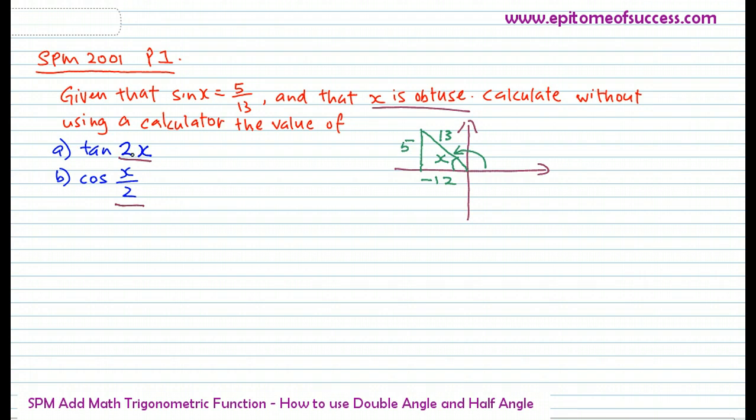Now, tangent 2x. It's double angle, so refer to the double angle formula list. I'm going to write out the formula. Tangent 2x would equal to 2 tangent x over 1 minus tangent square x. Now, all you have to do is substitute the correct value from the triangle that you have drawn.